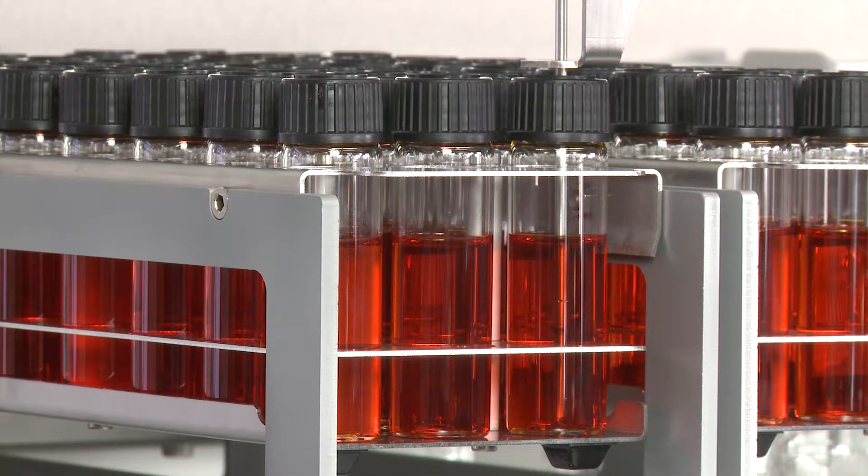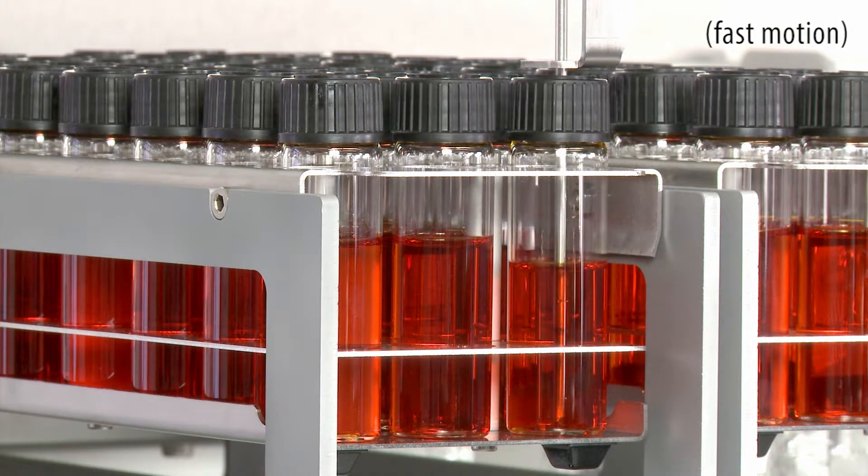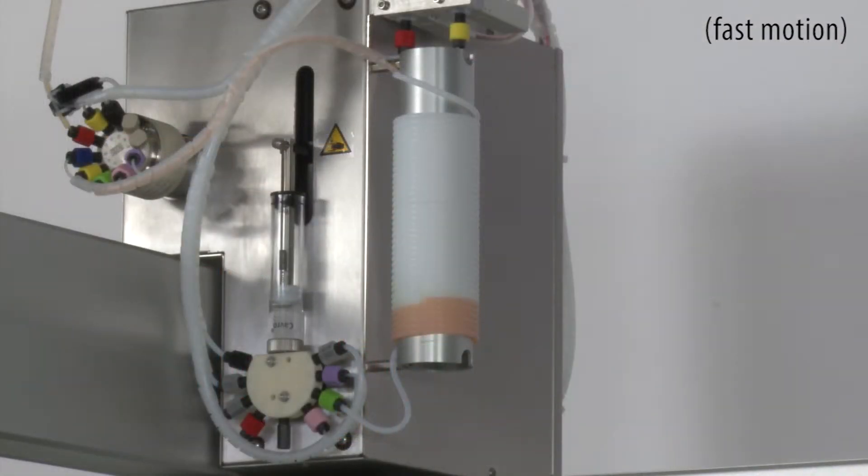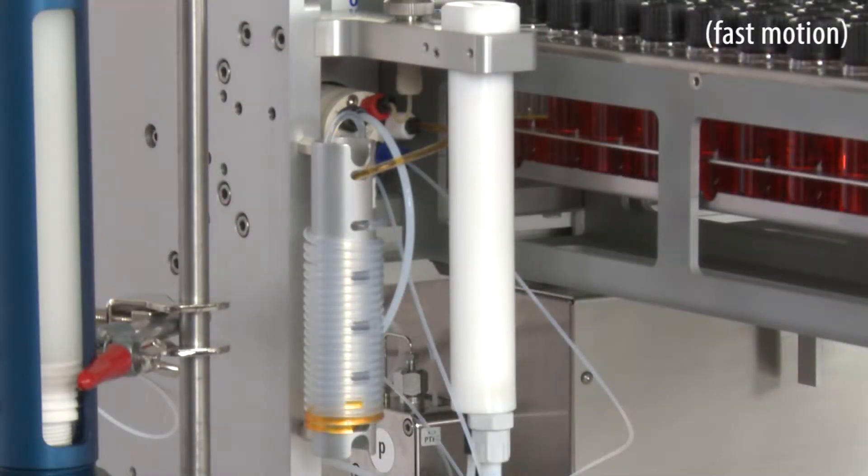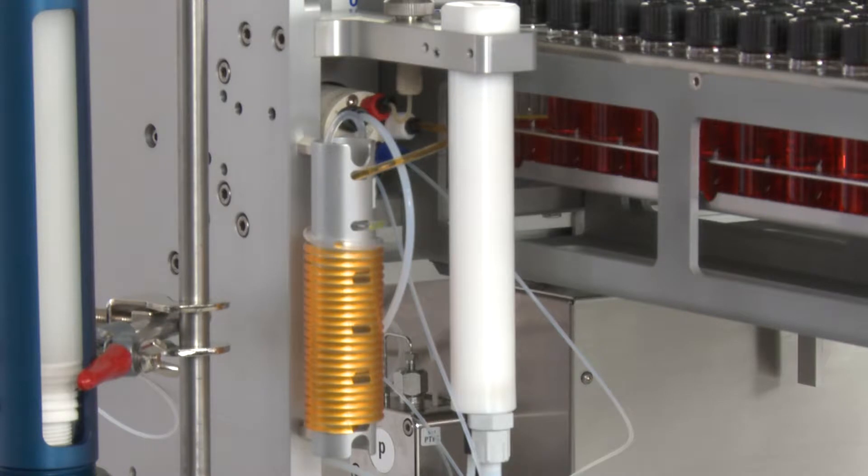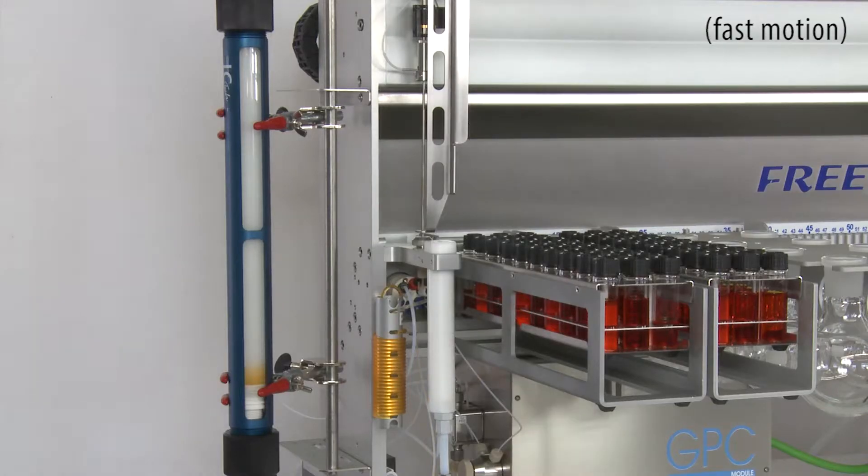The sample is taken up from a sealed container, fed into the needle loop, and injected into a calibrated sample loop. The injection valve is switched and the sample is put onto the GPC column.